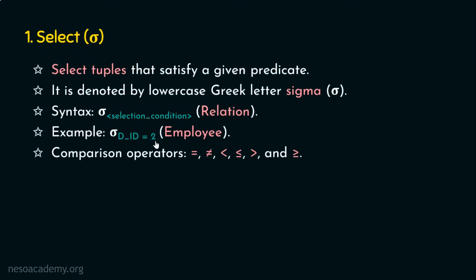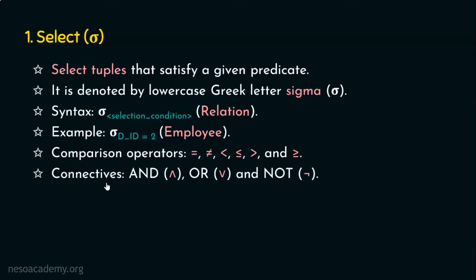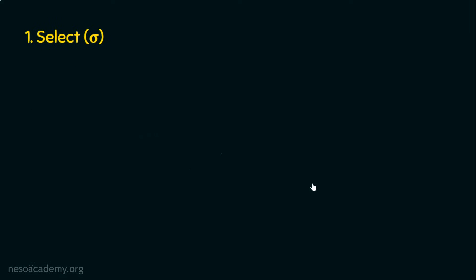Let's assume we need more conditions to be satisfied. For instance, from the employee relation, we want all employees where the department ID equals 2 and the salary is greater than $50,000 — both conditions must be satisfied. Multiple conditions can be provided in a relational algebra expression using connectives: AND, OR, and NOT. These are the logical operators used to combine predicates.